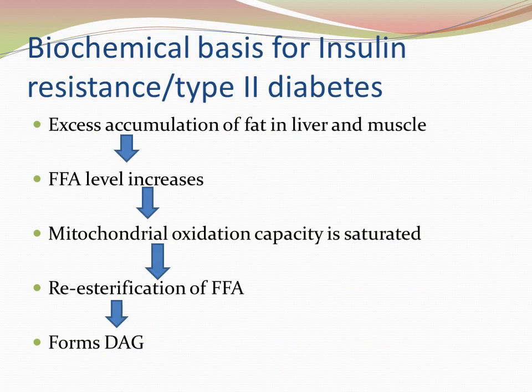When do we call it insulin resistance? Obese people are more prone to type 2 diabetes because they have excessive accumulation of fat subcutaneously as well as in organs. Even certain non-obese people who accumulate fat in the liver and viscera are prone to insulin resistance. Whenever there is excessive fat accumulation in the liver and muscle, free fatty acid levels start increasing due to ongoing lipolysis in adipose tissue.